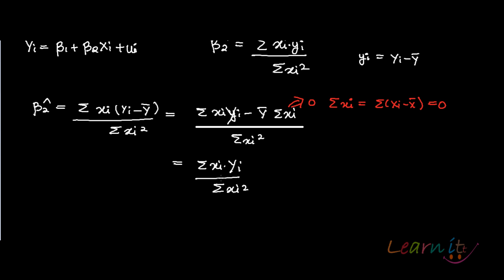So you can write xᵢ upon summation xᵢ squared as kᵢ. This is non-stochastic; since xᵢ are assumed to be non-stochastic, kᵢ would also be non-stochastic.